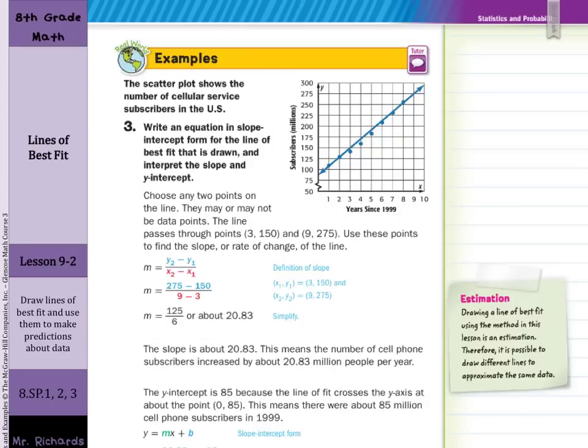So you're going to calculate the slope. You're going to look at the y-intercept. So the slope was 20.83. So that means 20.83 million people per year is what the subscribers increased by since we have a positive slope. The y-intercept is 85 because the line crosses the y-axis at the point, if you estimate here, about 85. Well this is years since 1999 where it crosses the y-axis, 0 years since 1999, which means there were 85 million cell phone subscribers in 1999.